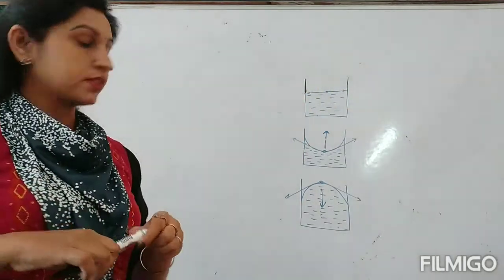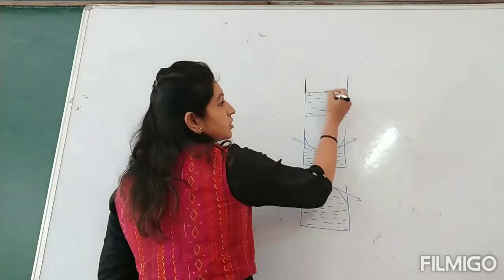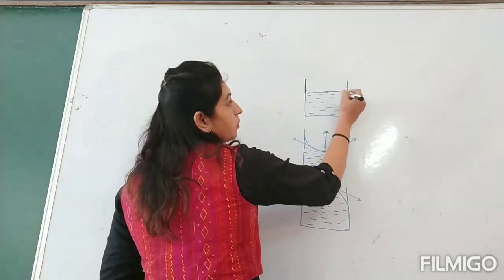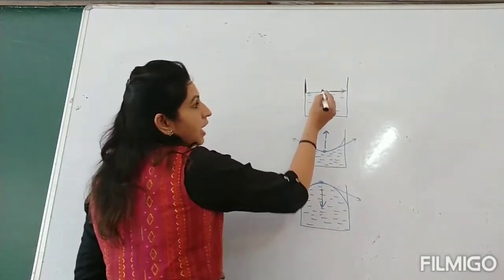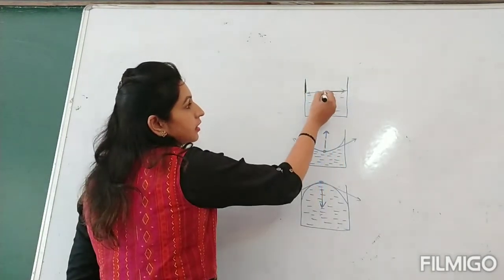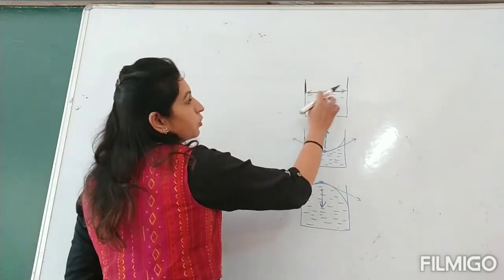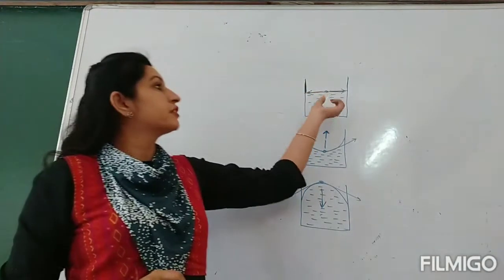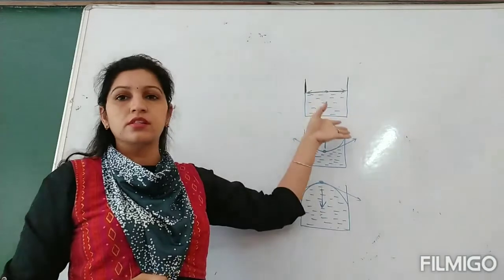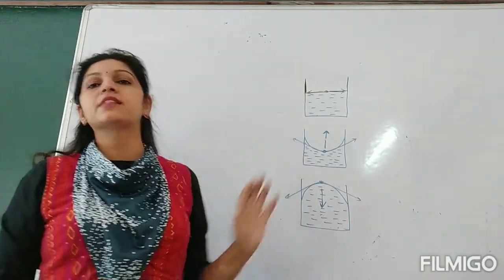If it has a plain meniscus, then the force of surface tension acts along the tangent. One force acts along one tangent of the surface and another force acts along the other tangent. Both are equal and opposite, so the resultant force of surface tension is zero. There is no excess pressure for the plain surface.